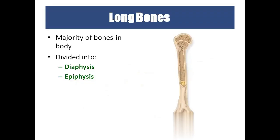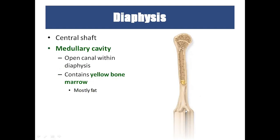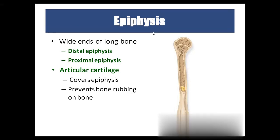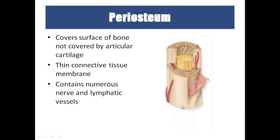In a long bone, there are two main parts: the lengthier part is called the diaphysis, and the ends are called the epiphysis. Inside the diaphysis, we have the medullary cavity containing yellow bone marrow, which has more fat deposition. The end near the body is the proximal epiphysis, and the end farther from the body is the distal epiphysis.